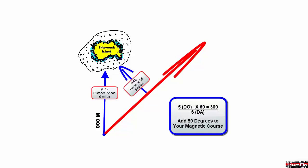We want to multiply five nautical miles, our distance off, times 60. This gives us 300. Next we divide by six nautical miles, our distance ahead, and this gives us 50 degrees.